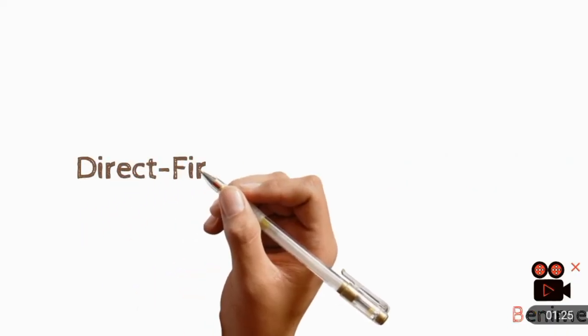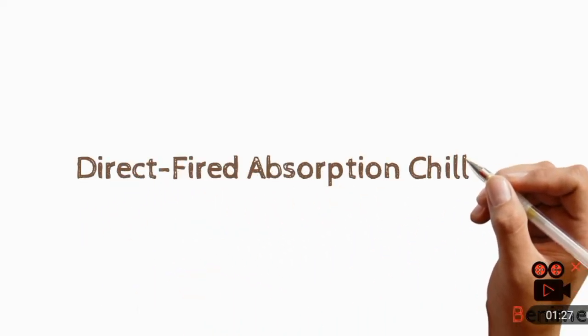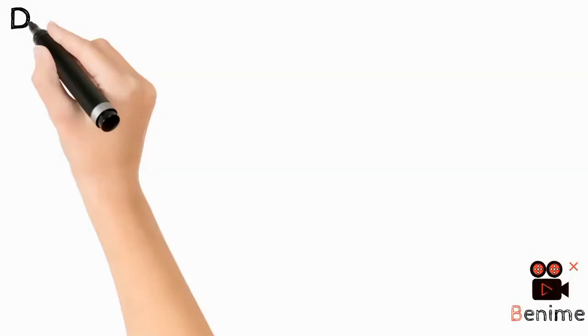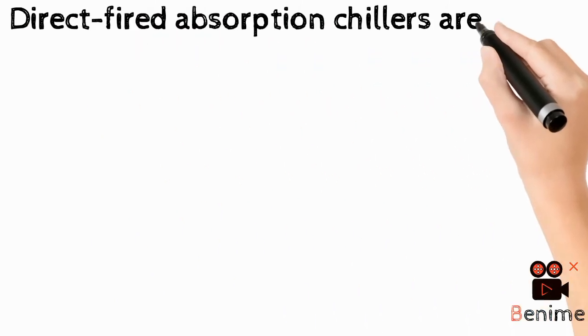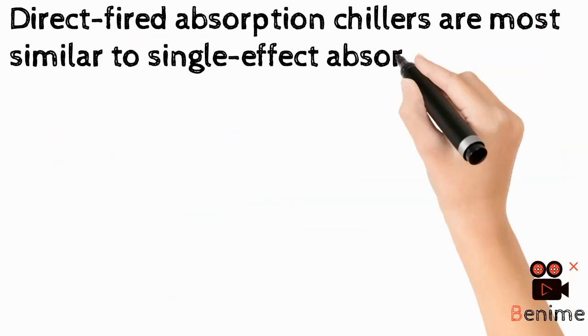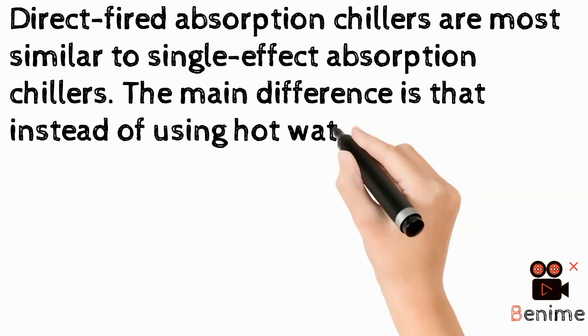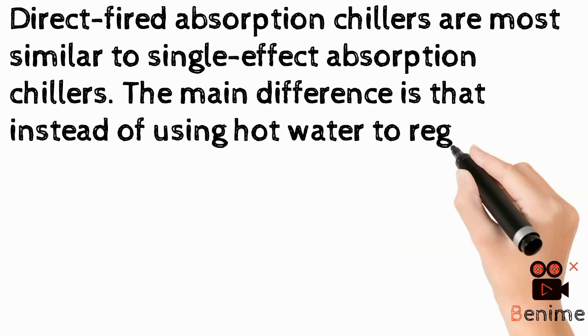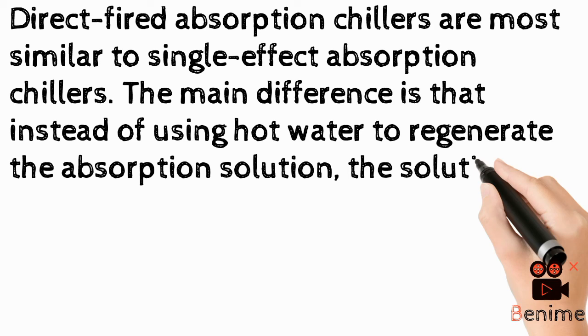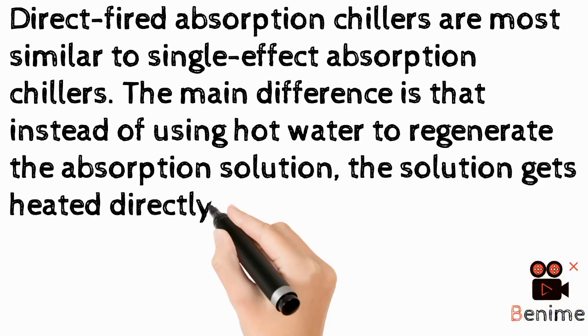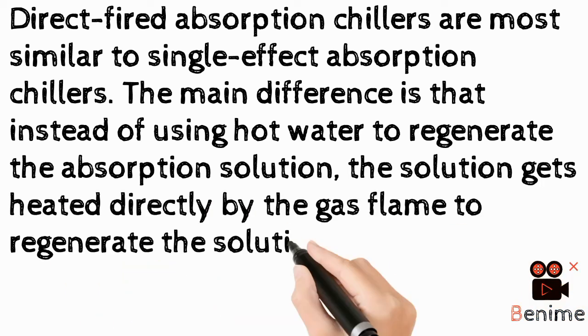The heat in the condenser is absorbed by cooling water. The last type is the Direct Fire Absorption Chiller. Direct Fire Absorption Chillers are most similar to the Single Effect Chiller, but the main difference is that instead of using hot water to regenerate the absorbent solution, the solution is heated directly by a gas flame to regenerate the solution and the refrigerant.